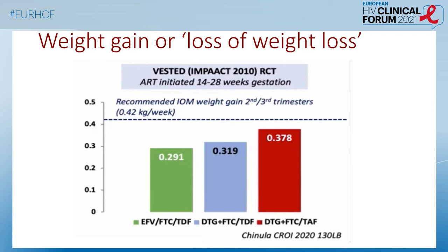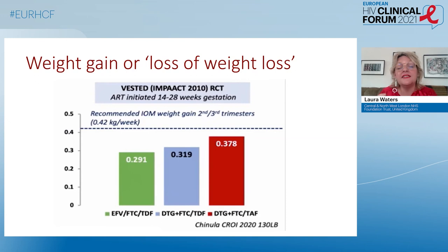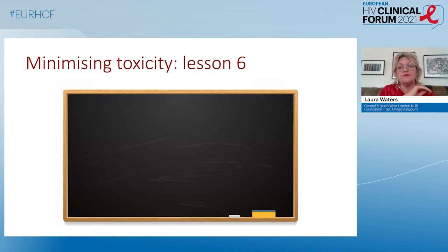The most compelling part of that argument is data from CROI looking at the use of different regimens in pregnancy. Dolutegravir with FTC and TAF — a regimen associated with excess weight gain in studies such as ADVANCE — was the regimen associated with weight gain in pregnancy closest to normal. The dotted line along the top represents normal weight gain in the second and third trimesters, and it was dolutegravir/FTC/TAF where weight gain for women with HIV closely approached normal.